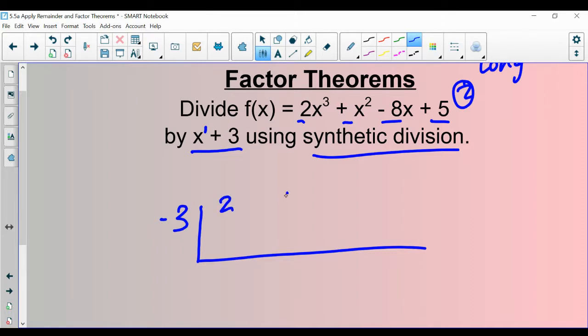So we're going to start with two, and then one, and then negative eight, and then five. These are the coefficients of the x's. In front of x cubed is two, in front of x squared is one, in front of x is negative eight, and the one with no x is five.